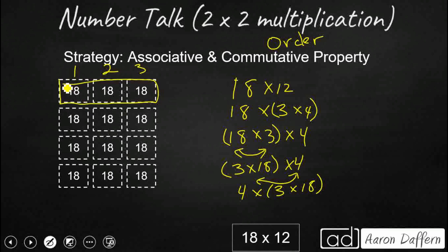1, 2, 3. So I need three 18s. That's going to be 54. And I just need to skip count by 54 four different times because I've got four groups of three groups of 18s. That's 108, 162, and 216 is where we end up as always, as our 4 times 54.